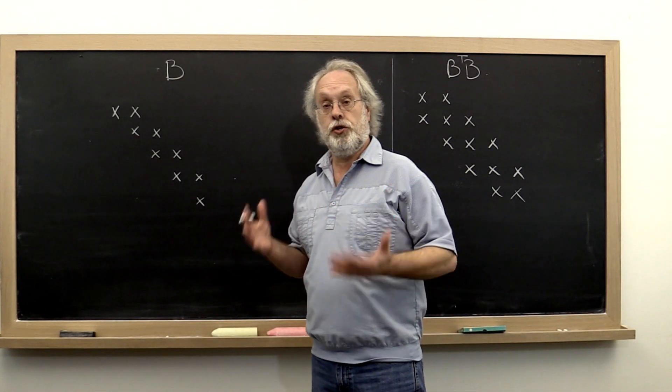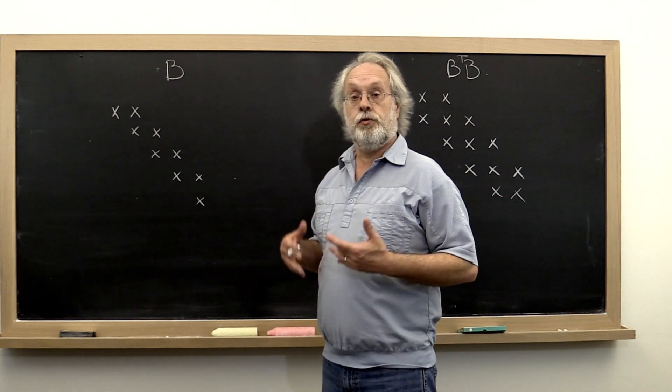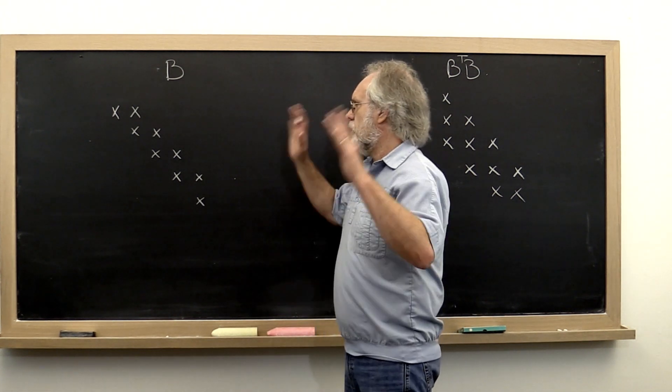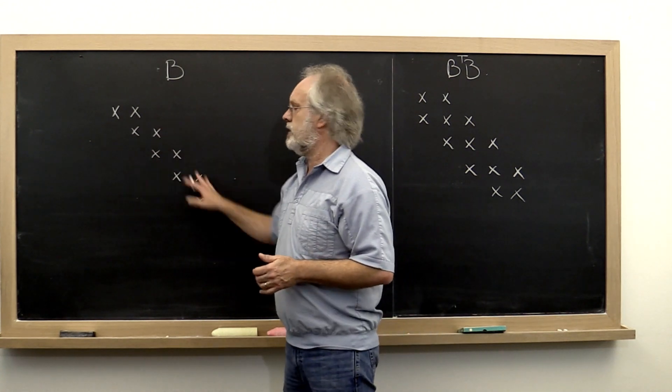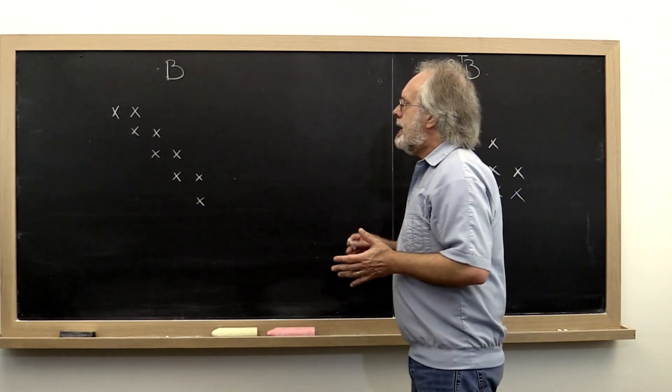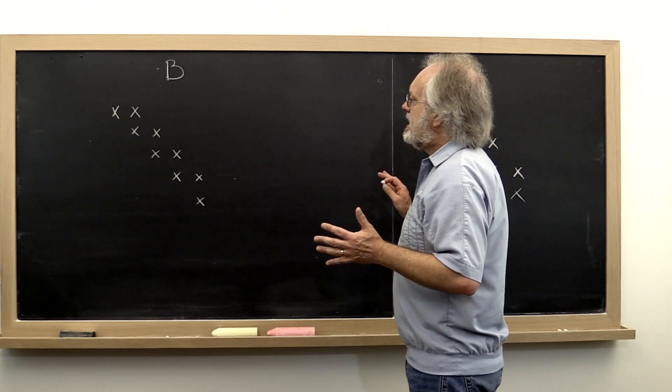So let's assume that we have reduced our matrix to bidiagonal form. And there is once again a little post-process by which you can actually ensure that the matrix is real valued. And now what?